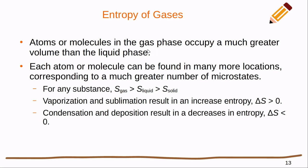Atoms or molecules in the gas phase occupy a much greater volume than in the liquid phase. This leads to a really explosive increase in the number of possible microstates for these gas systems. Each atom or molecule can be found in many more locations. This results in a general statement: the entropy of gases is greater than the entropy of liquids, which is greater than the entropy of solids.